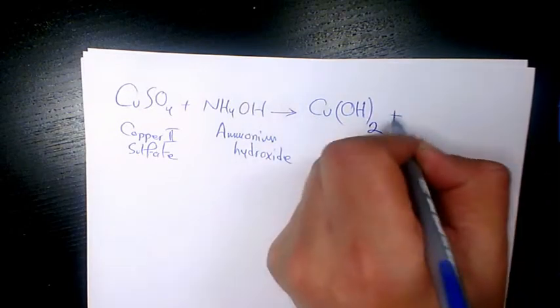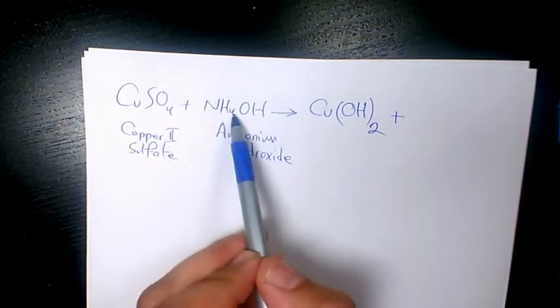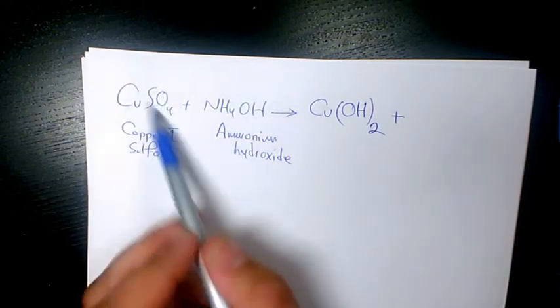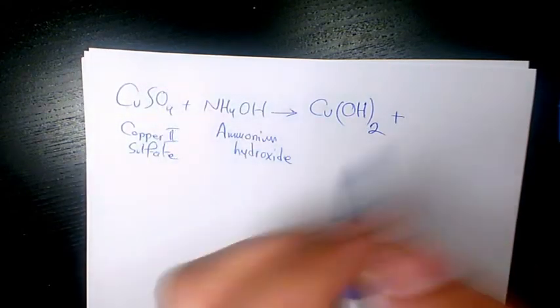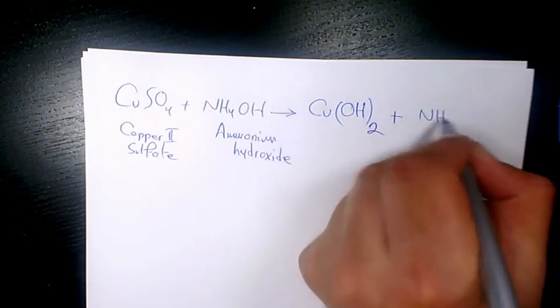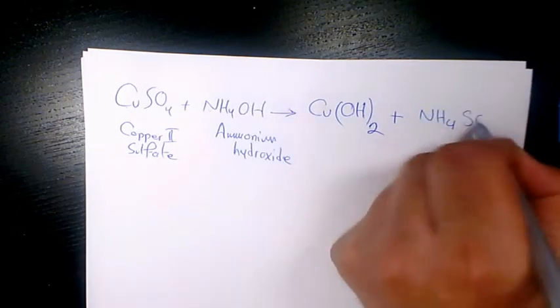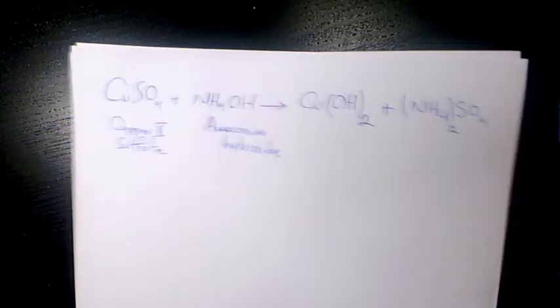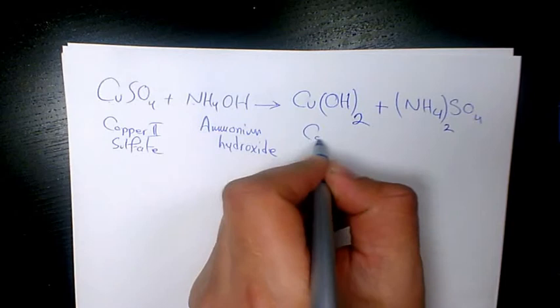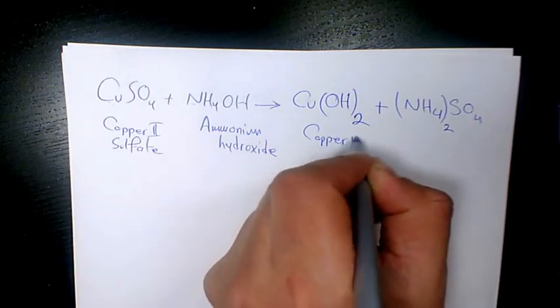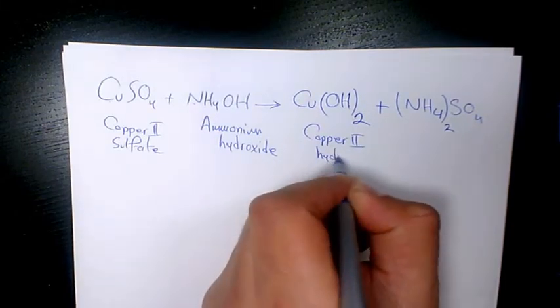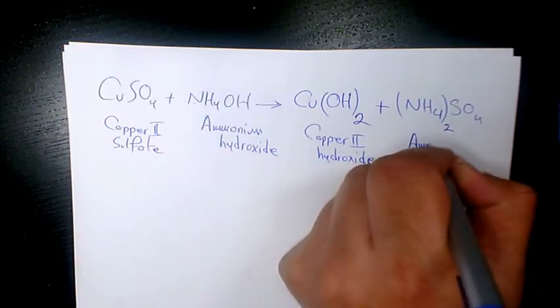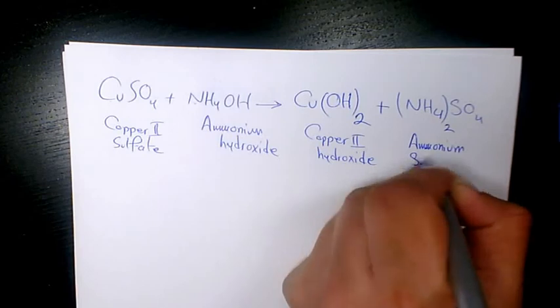Plus NH4, the ammonium has plus 1, it's going to react with SO4 which is 2 minus. So it's going to be (NH4)2SO4. So we have 2 in here. So this one is going to be copper 2 hydroxide and we have here ammonium sulfate.